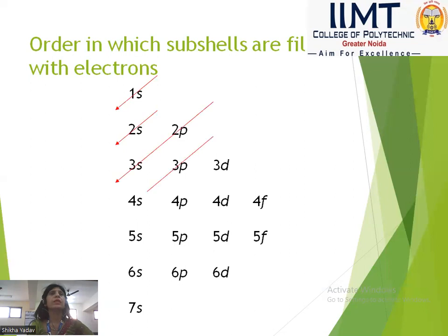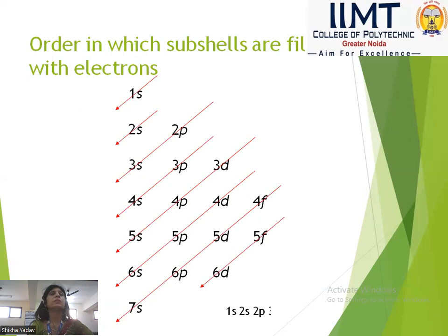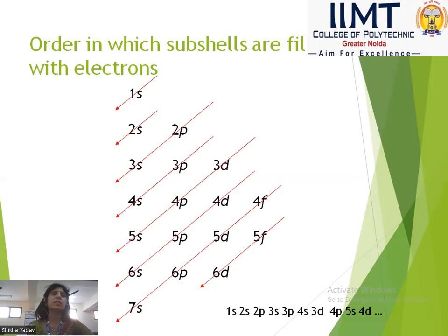This diagram shows how to fill electrons. The order is: 1s, 2s, 2p, 3s, 3p, 4s, 3d, 4p, 5s, 4d, 5p, 6s, 4f, 5d, 6p, 7s, 5f, 6d.